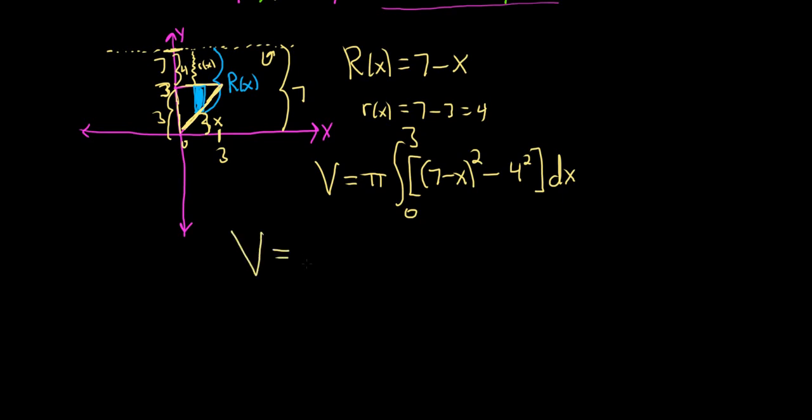So the volume will be equal to pi integral from 0 to 3. We can use a formula to multiply this out. You know what? If you like, this is what I'm going to do. Check this out. Watch this. I'm going to switch the 7 and the x because it's bothering me. You might say, oh, you can't do that. Yes, you can.